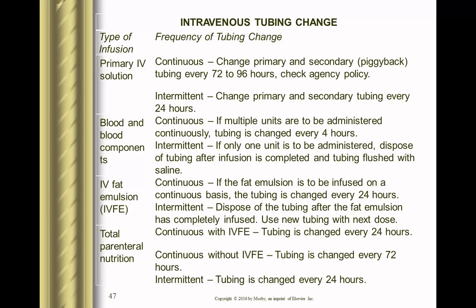Primary and secondary tubings are usually changed every three to four days, depending on policy. Blood and blood products tubing is changed per policy; we'll cover that in an upcoming lecture. IV fat replacement tubing is generally changed every 24 hours. TPN tubing at St. Joe's is changed with every bag change — so every 24 hours.